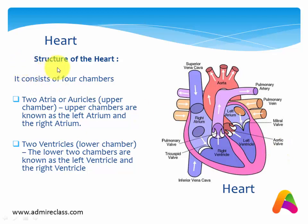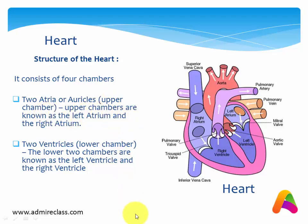Now we move to the structure of the heart. You can see the picture of the heart with the parts mentioned. It consists of four chambers. The first is two atria, also called auricles — these are the upper chambers, known as the left atrium and the right atrium. You can see in the picture this is the right atrium and this is the left atrium.